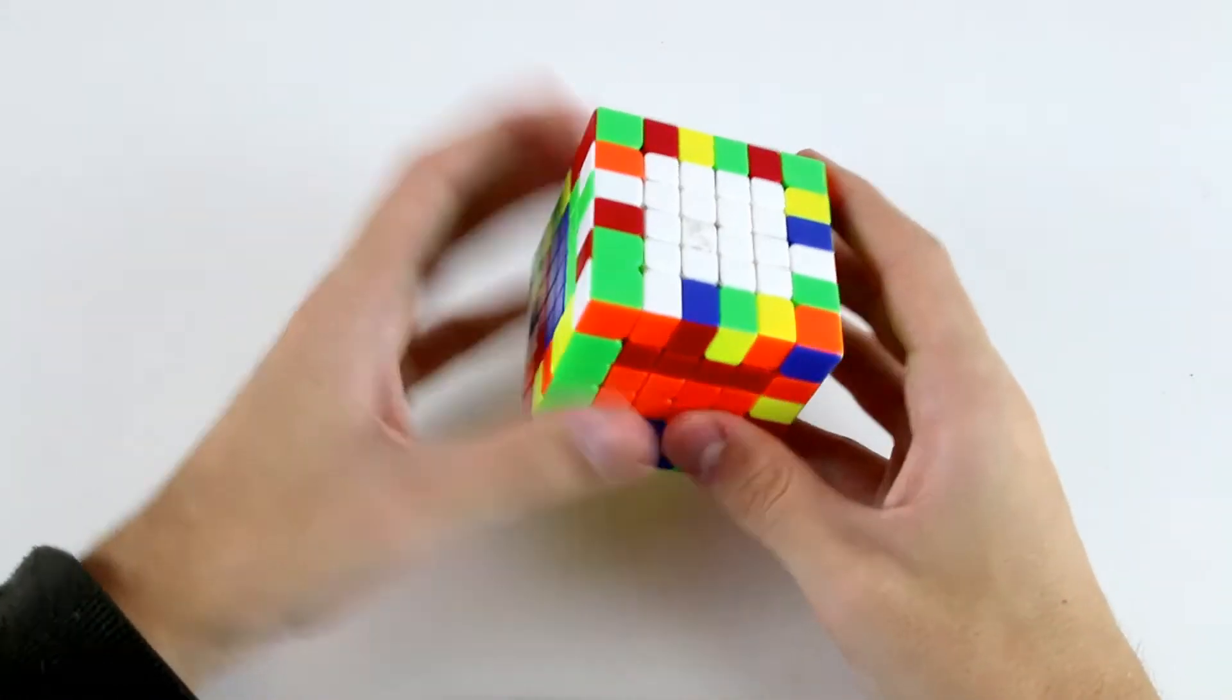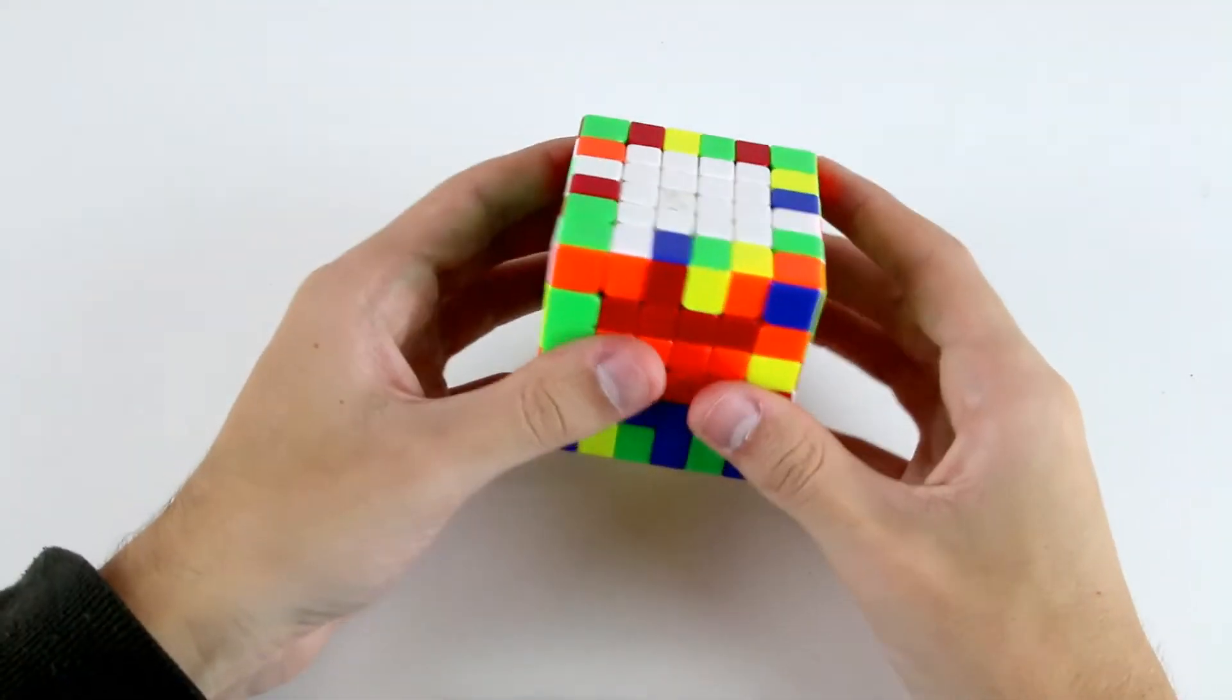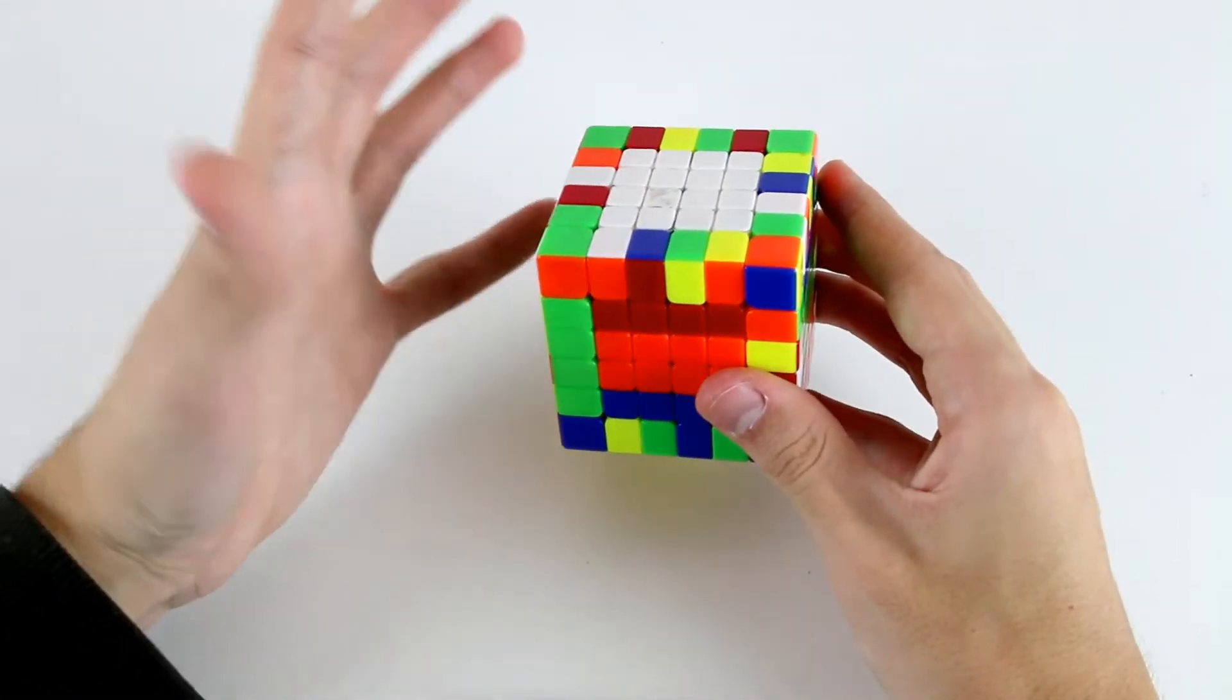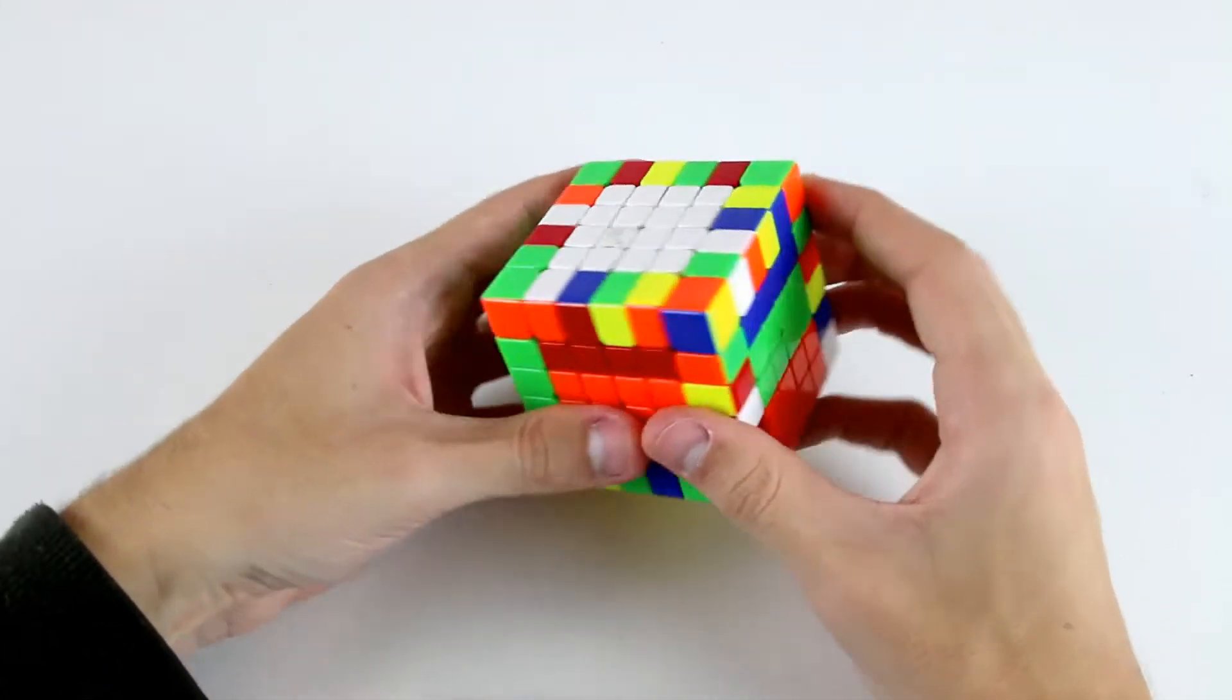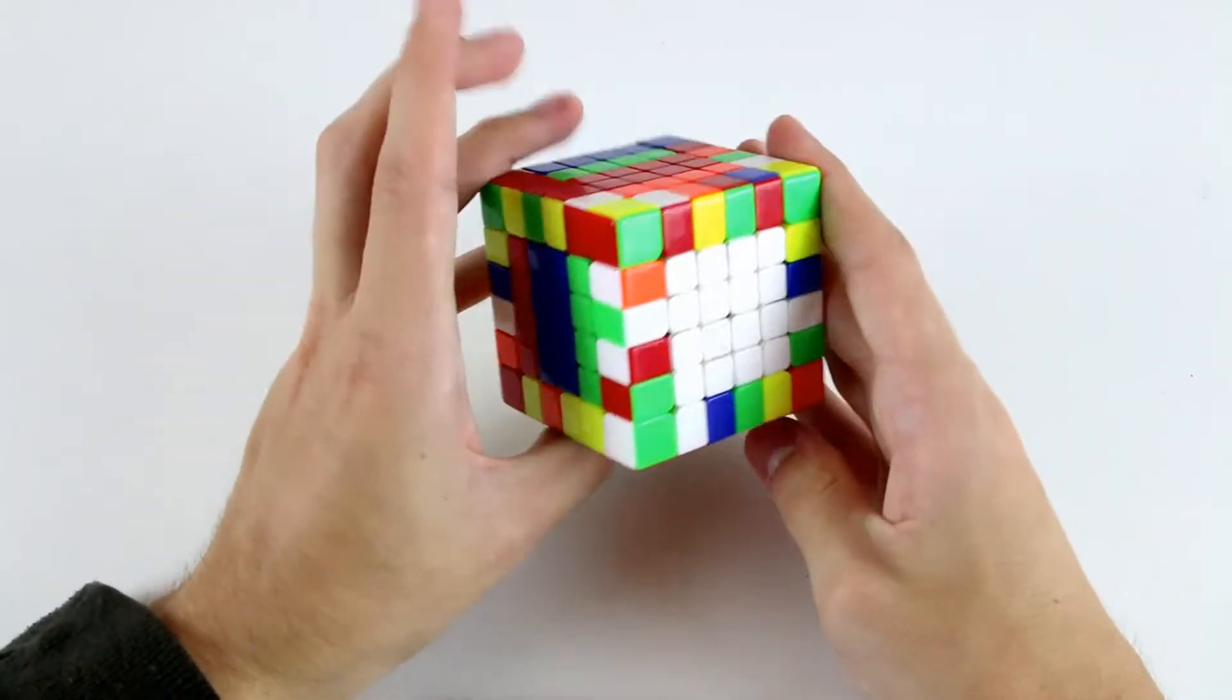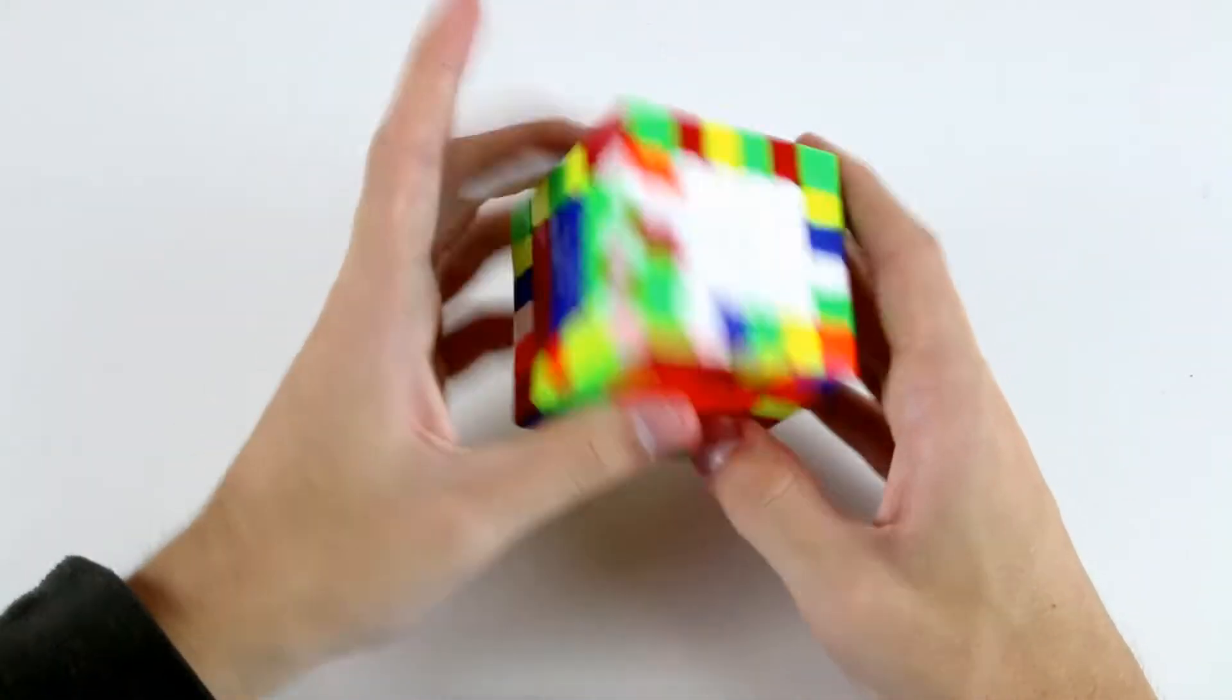The next tip is something you've probably heard before many times but it's particularly relevant to edge pairing on big cubes. Turn slowly and look ahead and solve pieces efficiently rather than turning super quickly and having lots of pauses in your edge pairing.